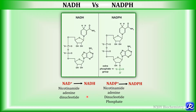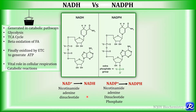Both NADH and NADPH have different functions in the body. NADH is generated in various catabolic pathways like glycolysis, TCA cycle, and beta-oxidation of fatty acids. This NADH is finally oxidized through the respiratory chain, that is the electron transport chain, to generate ATP. So these reducing equivalents enter the respiratory chain and we get ATP. NADH has a vital role in cellular respiration and catabolic reactions.